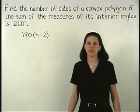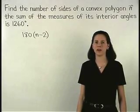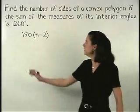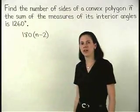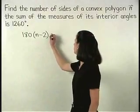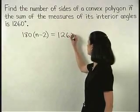And since the sum of the measures of the interior angles of the given polygon is 1260, we can set our formula equal to 1260.